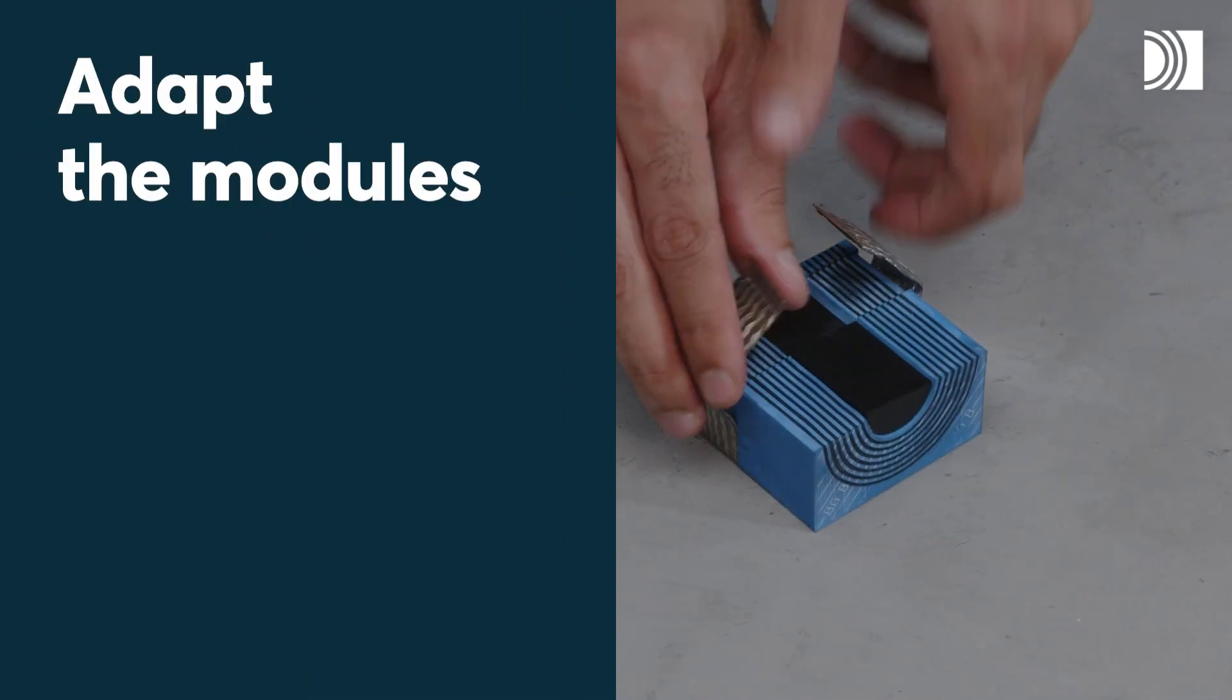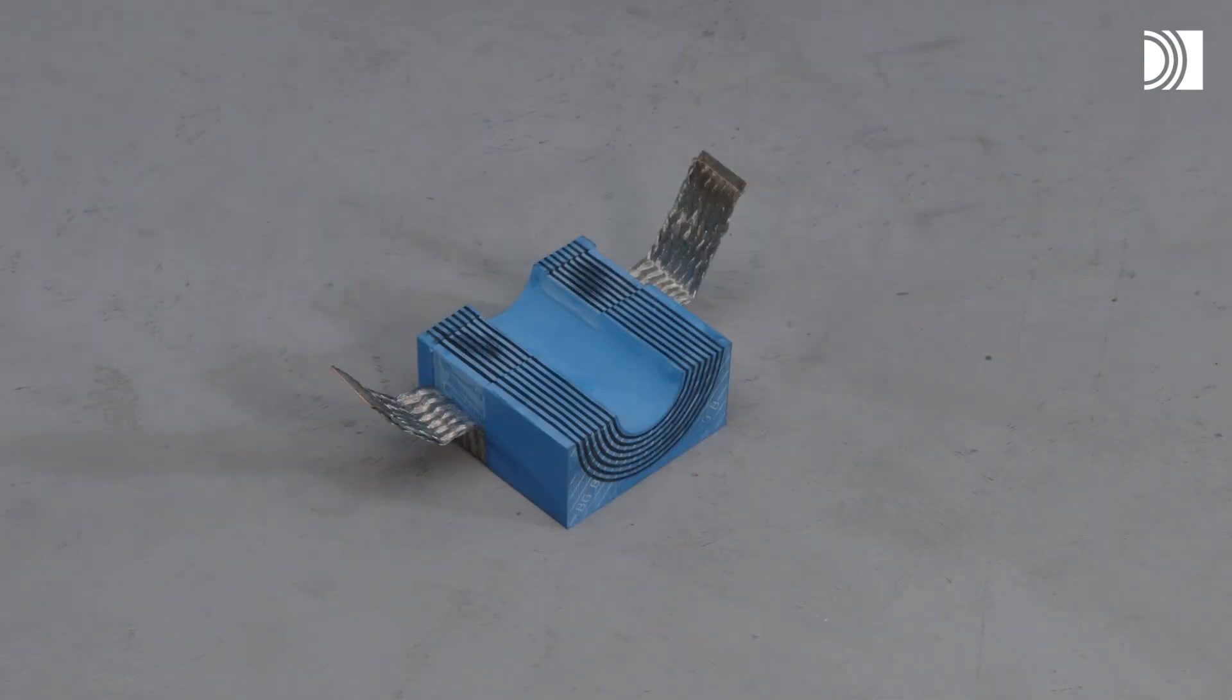Adapt the modules. Remove the cores and fold out the braid on all modules except spares.